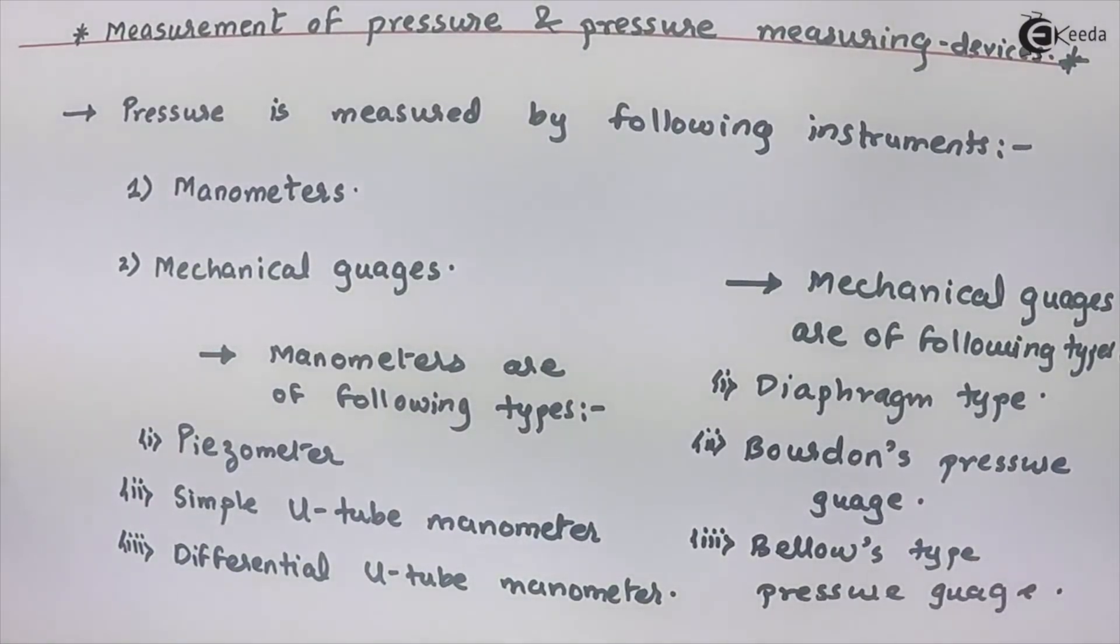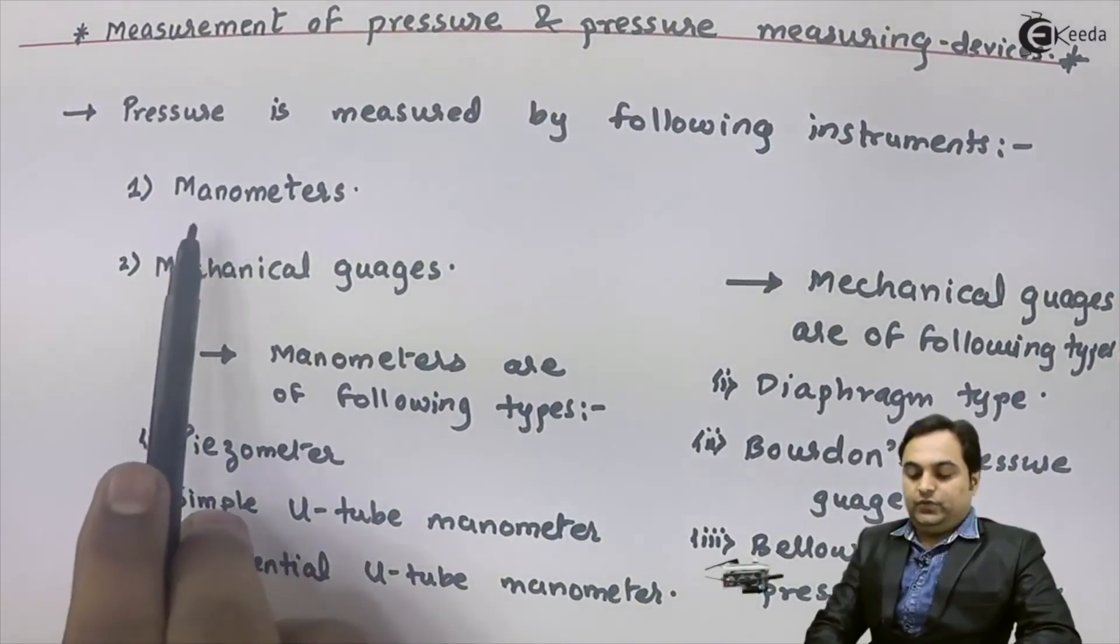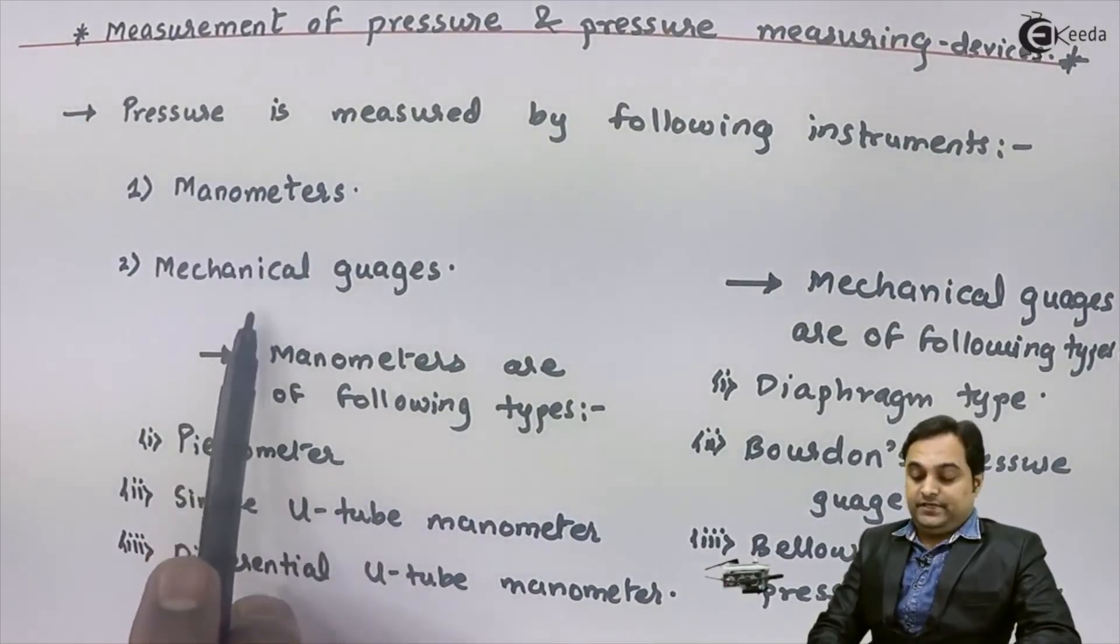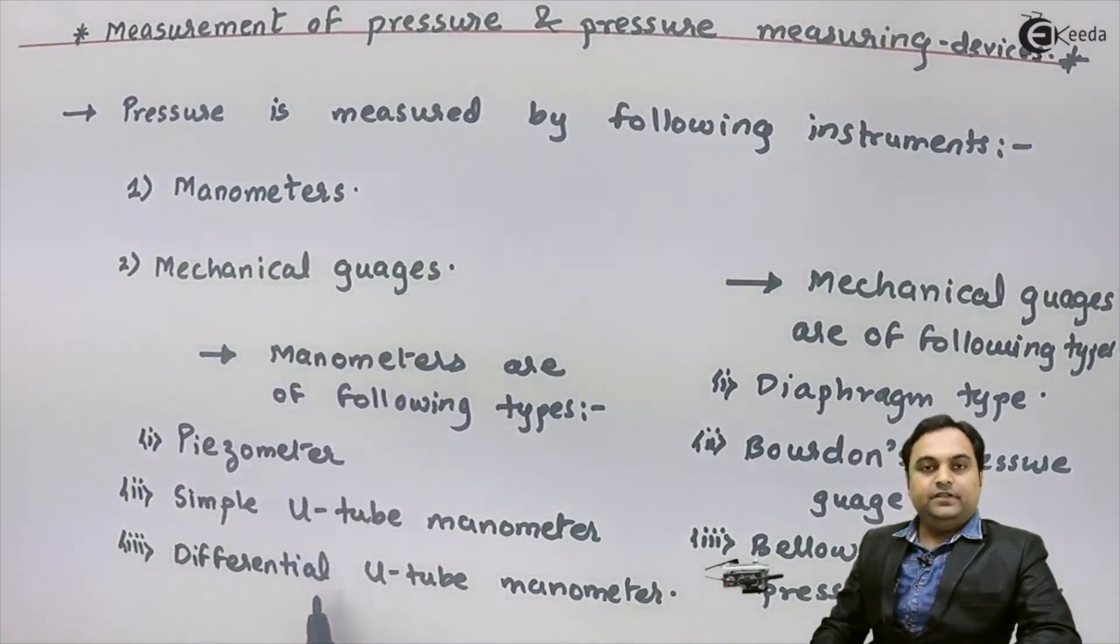So here I have mentioned two sets of measuring devices. The first heading was manometers and the second one mechanical gauges. In manometers, I have described them as piezometer, simple u-tube manometer, and differential u-tube manometer.